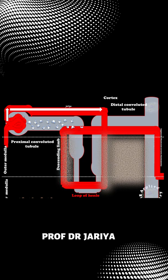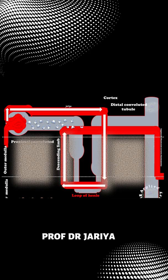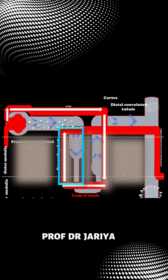In the vasa recta surrounding the descending limb of the loop of Henle, the blood is moving in the opposite direction to the movement of the urine, so the blood is climbing up and the urine is moving down parallel to it. The descending limb is permeable to water.